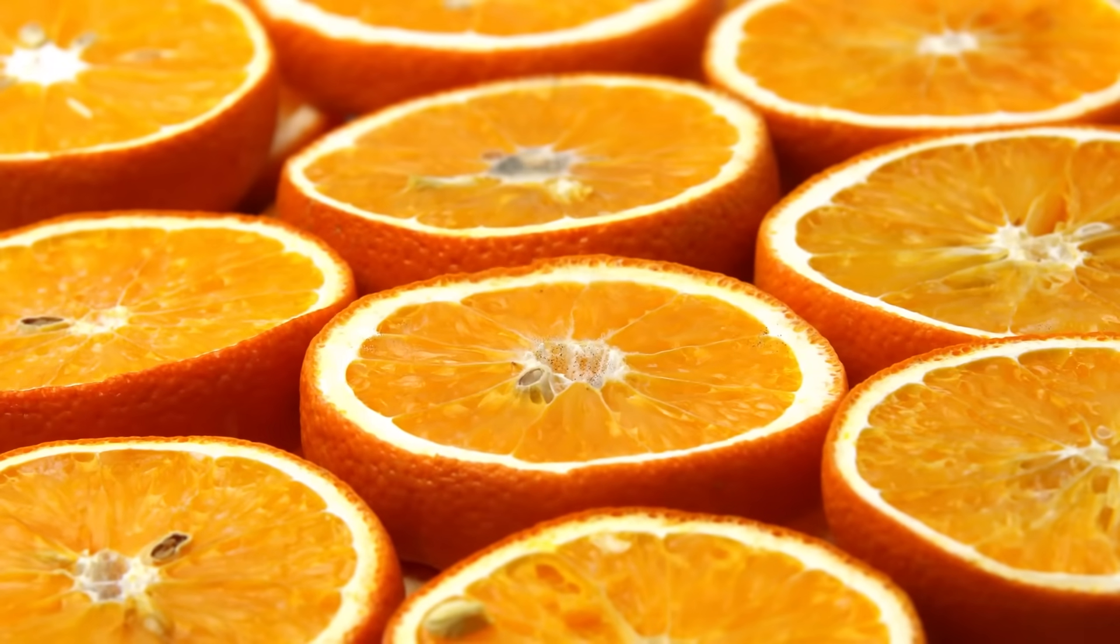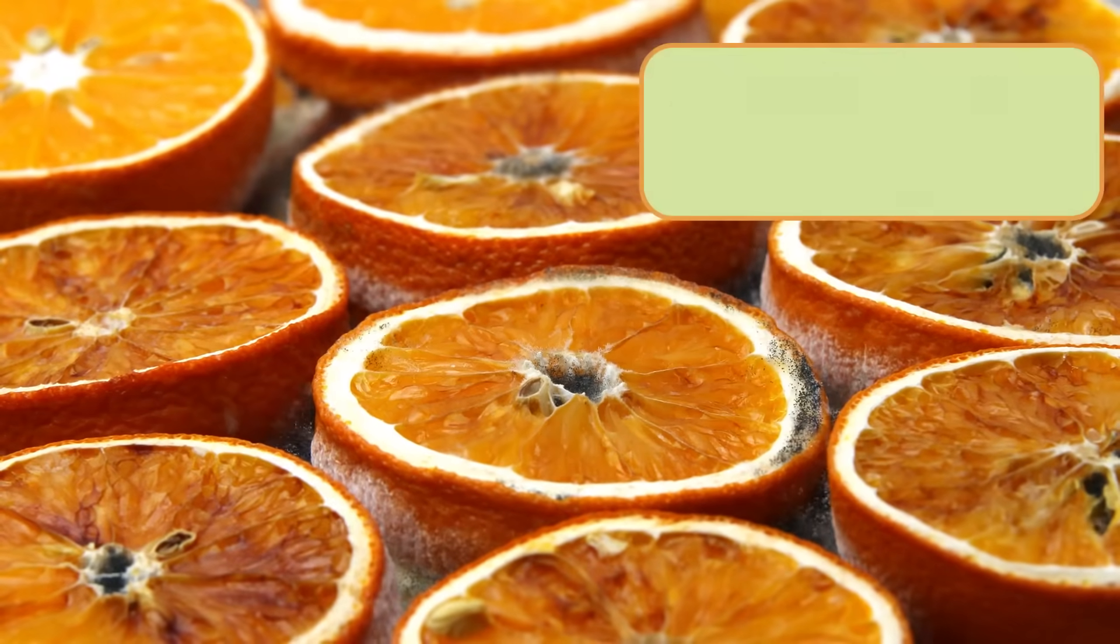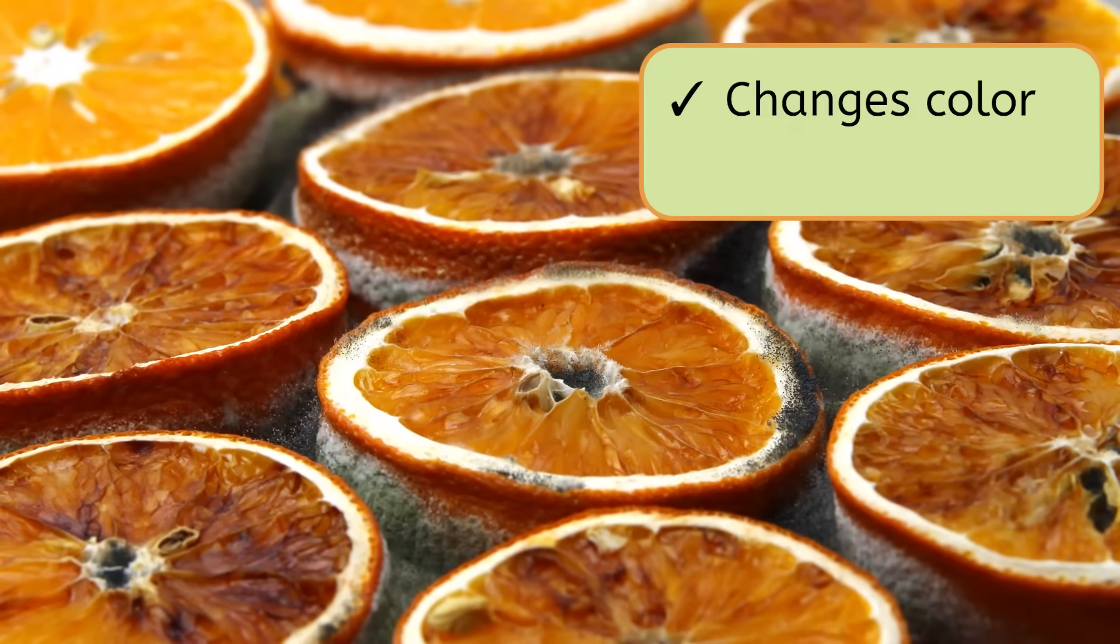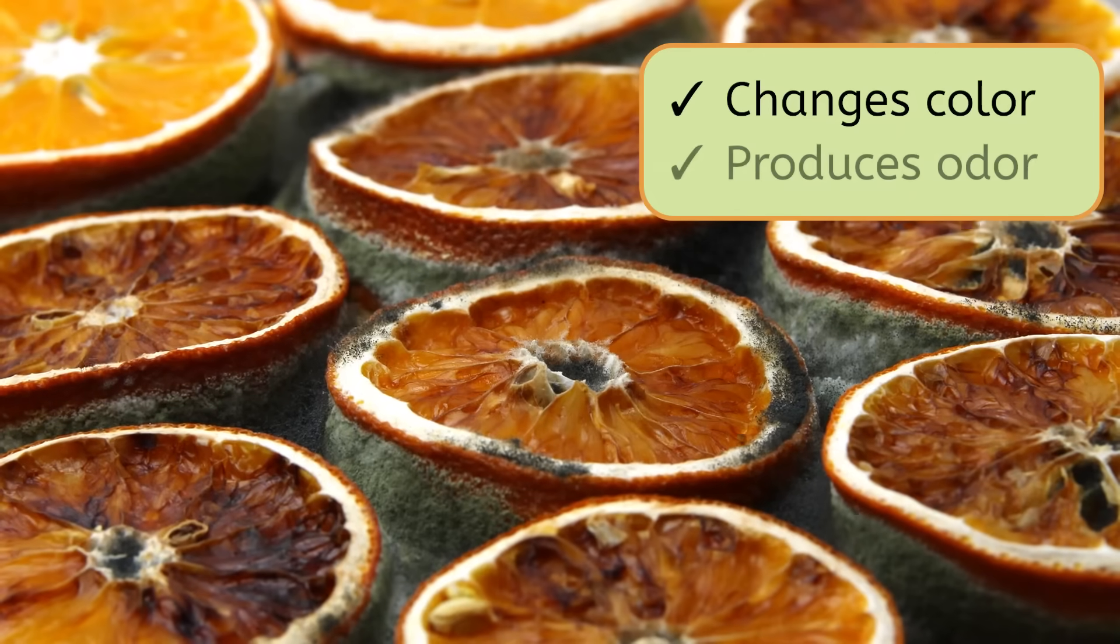What signs of a chemical change can we see with an orange as it rots? The fruit will begin to change color, a sign of a chemical change. And you would probably notice an odor that wasn't there before.